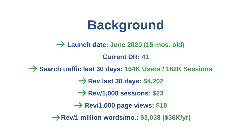Hey, John here. In this video, I'm going to step you through an in-depth content analysis and breakdown of one of my niche sites. This is not Fat Stacks. It's my second most profitable site in my portfolio. In the last 30 days, it earned $4,200. Search traffic is growing nicely — it's at 182,000 sessions per month, 164K users per month. It's a 15-month old site with a DR41. I did seed this site with 79 articles from another website that already had established traffic.